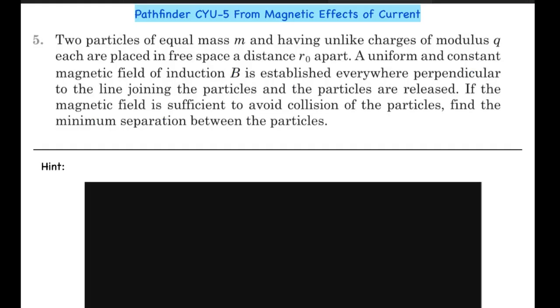Hello guys, here we have question number five from the check and understanding exercise of the chapter magnetic effects of electric current from Pathfinder. By the way, this is my first ever solution in LaTeX, so there might be some mistakes. Forgive me for that. So let's look at the question. Two particles of equal mass m and having unlike charges of modulus q.